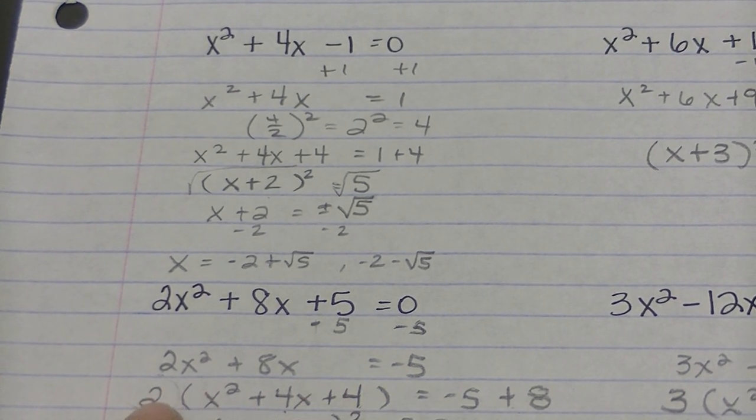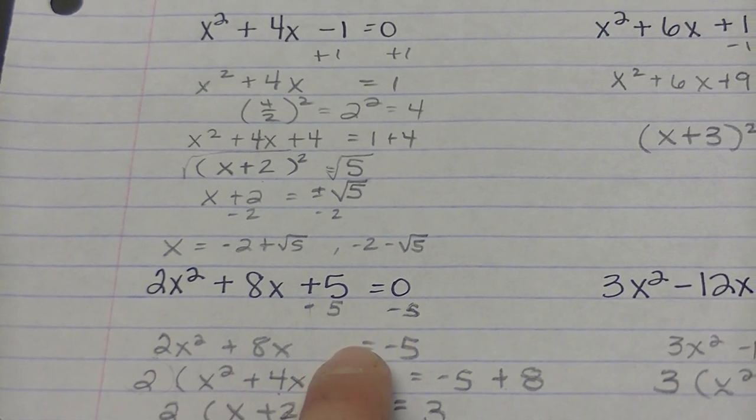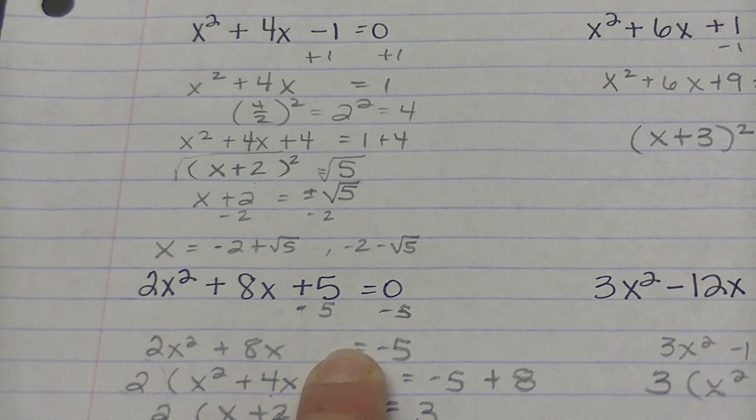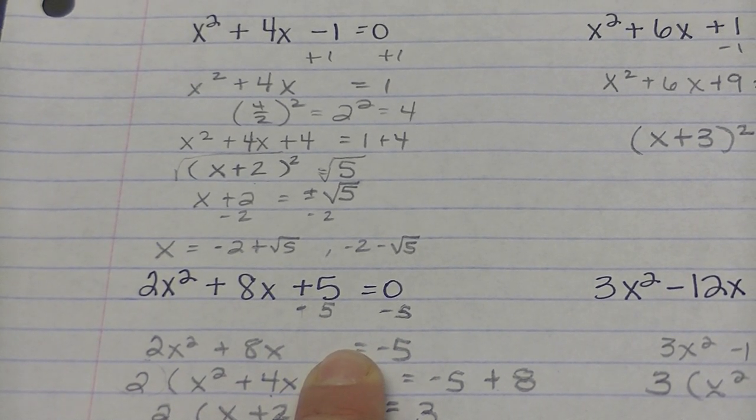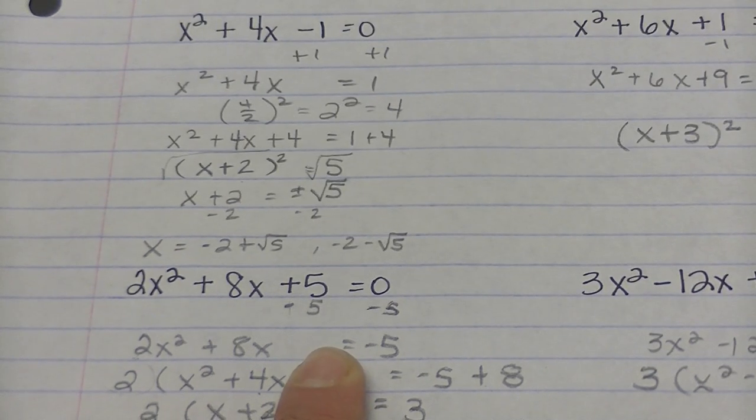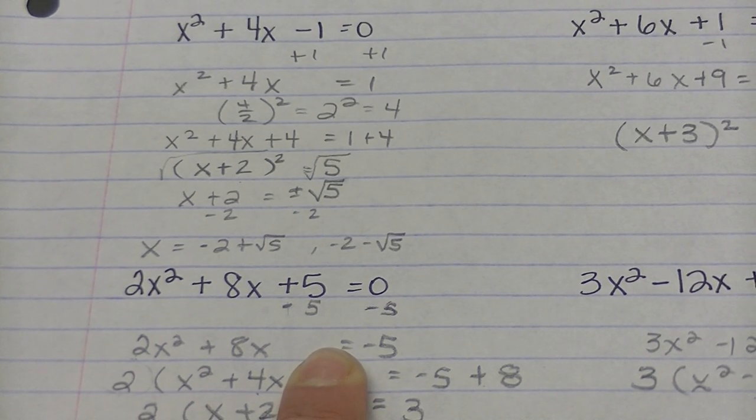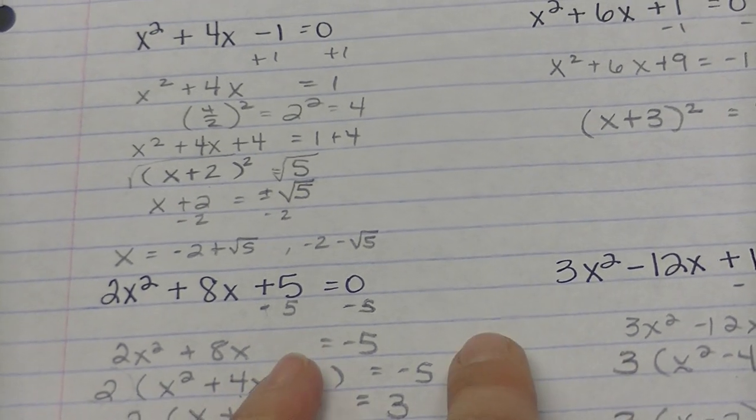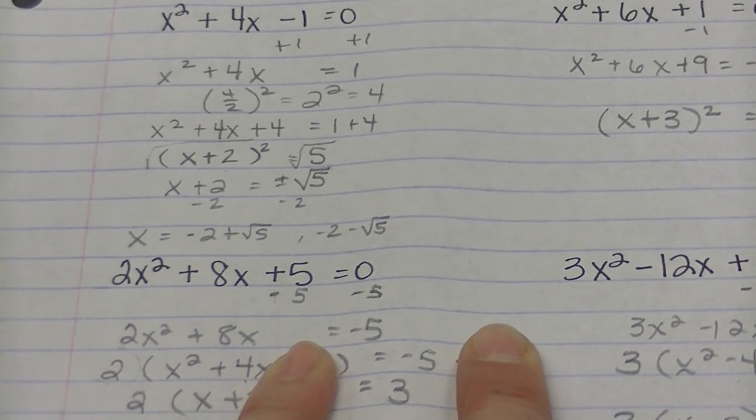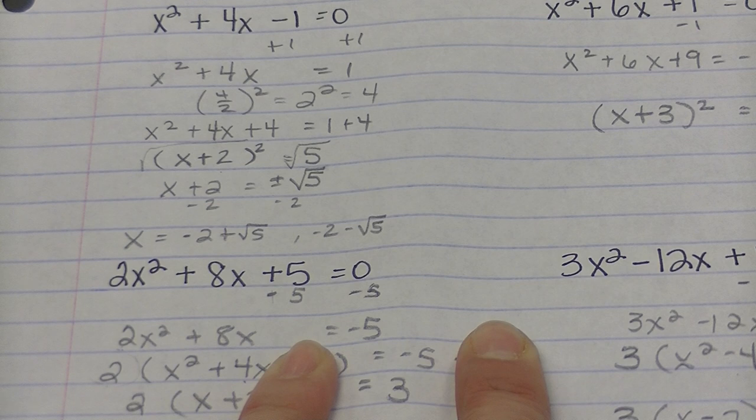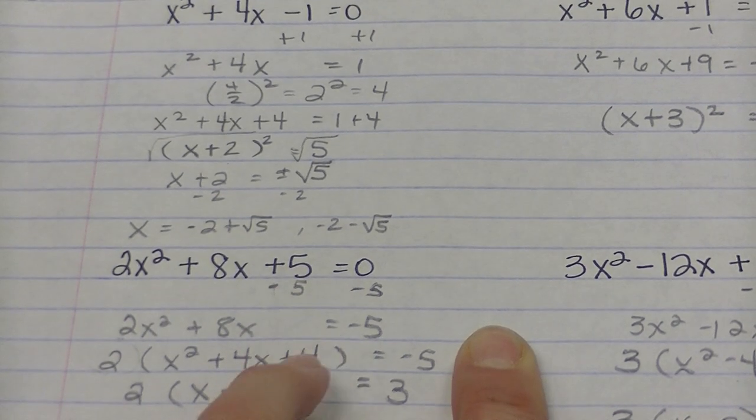The next thing I'm going to do is factor out the 2. So let's pretend that 4 is not here right now. So I factored out the 2 and I'm left with x squared plus 4x. And I've still got equals negative 5 because factoring out a 2 doesn't change the value. At that point, I've got to take half of that middle number, divide it by 2 and square it.